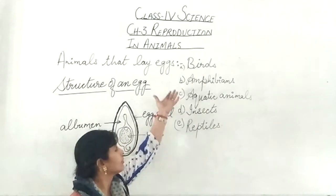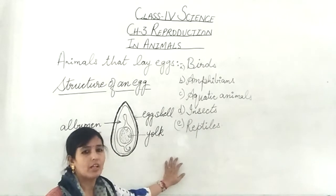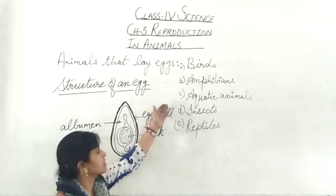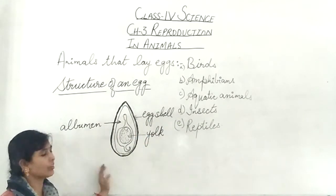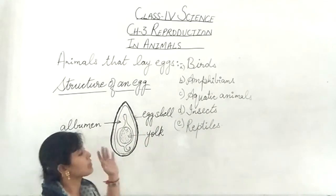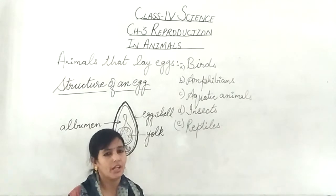So these are the few examples of animals that lay eggs like birds, amphibians, aquatic animals, insects and reptiles. And this is the structure of an egg. I hope you have understood the topic of reproduction of animals. Thank you.